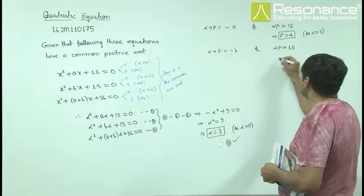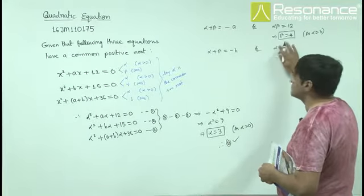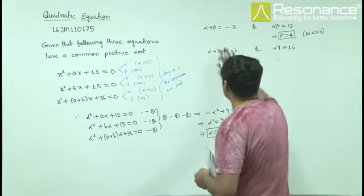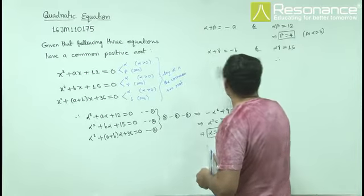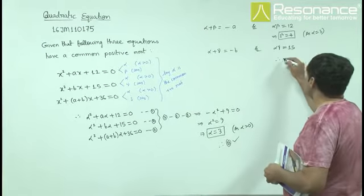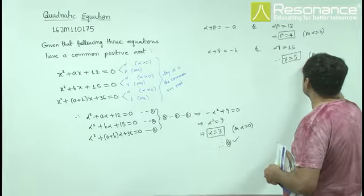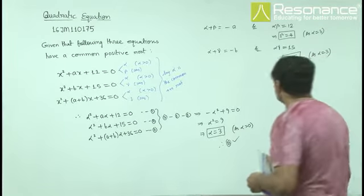For the second equation with alpha and gamma as roots, since α = 3 and the product is 15, gamma will be 5.